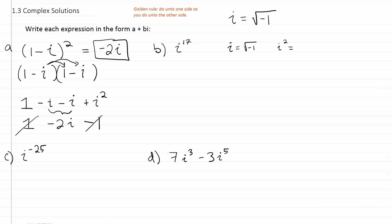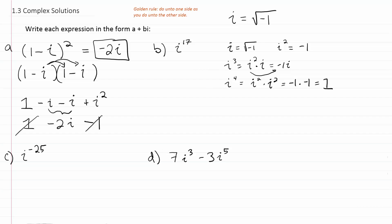We know i squared is just negative 1, because squaring the radical removes it. If we had i to the third power, that's i squared times i, which is negative 1 times i, so just negative i. And i to the fourth power is i squared times i squared, both equal to negative 1, so it's negative 1 times negative 1, which is positive 1.